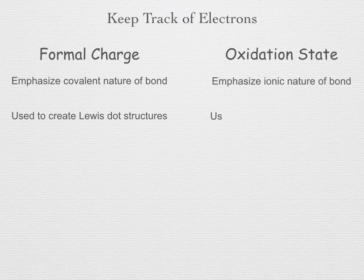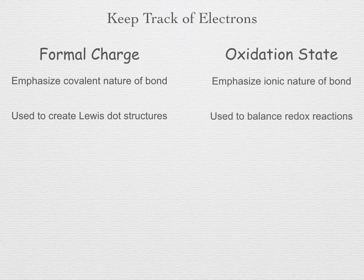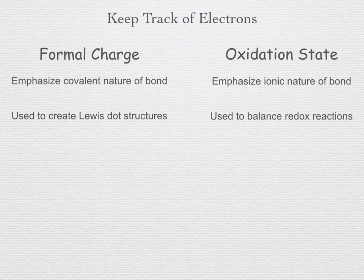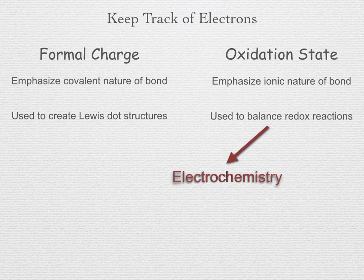On the other hand, oxidation number tends to emphasize ionic bonding character, envisioning the transfer of electrons between atoms. Such reactions are called redox reactions. Electrochemistry deals with reactions involving the transfer of electrons, and as such assigning oxidation states to atoms and molecules is most appropriate.